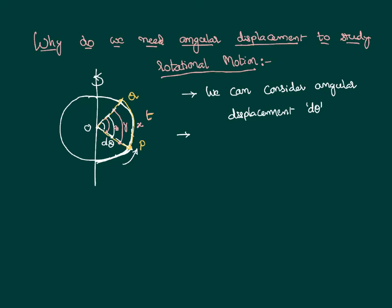Angular displacement is defined as the angle, which is equal to arc divided by radius. Let the value of the arc equal x and the radius equal r. Then we can write: dθ = x/r. Angular displacement is equal to x by r.